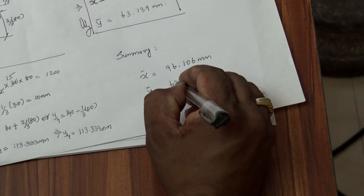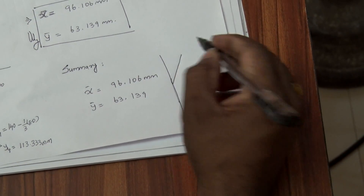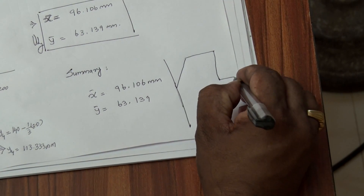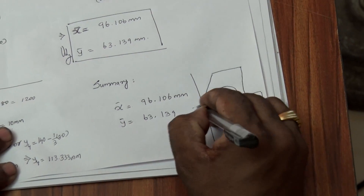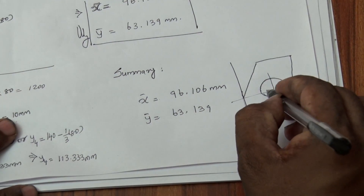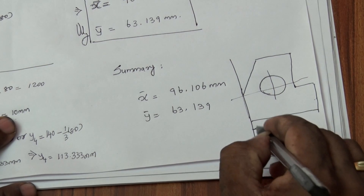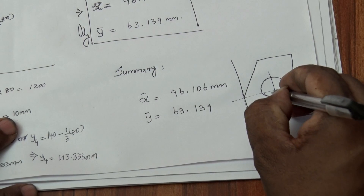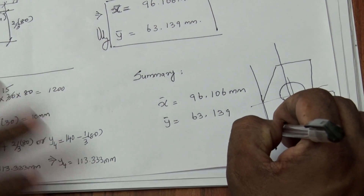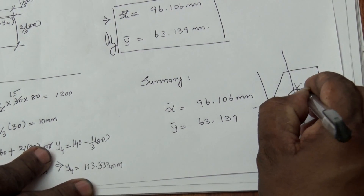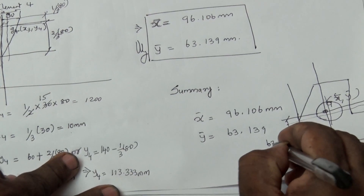Therefore, for the entire shaded shape, the centroid is located at X-bar equal to 96.106 mm from the Y-axis, and Y-bar equal to 63.139 mm from the X-axis.